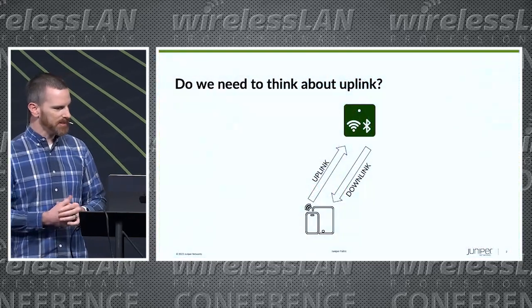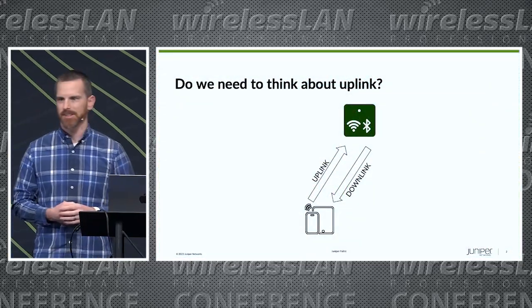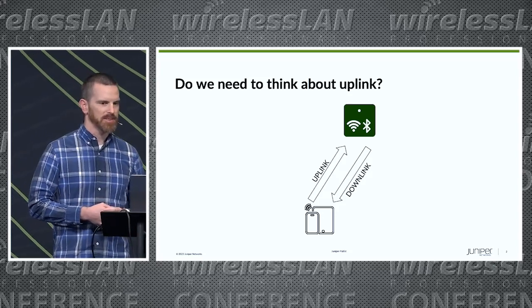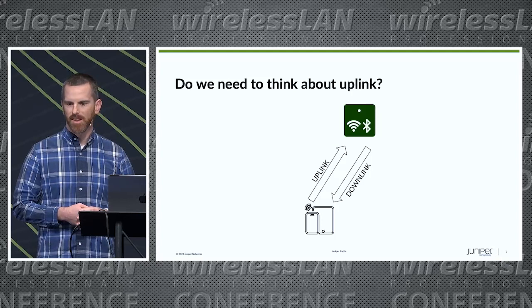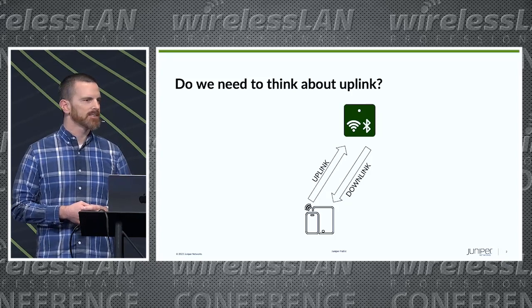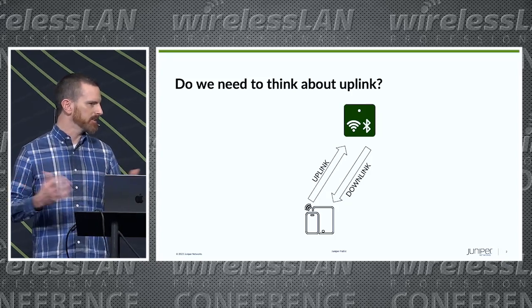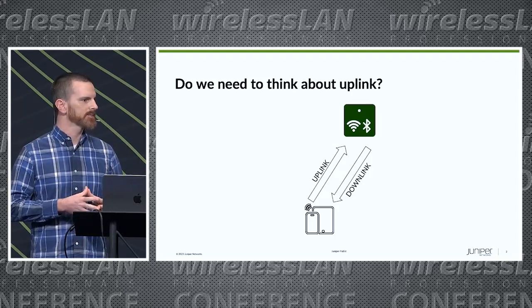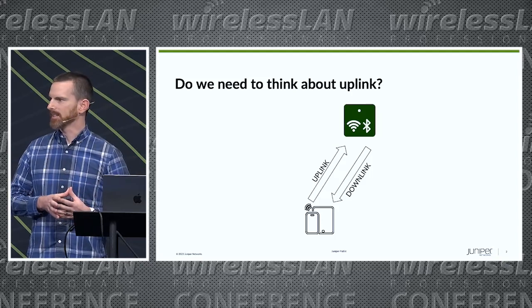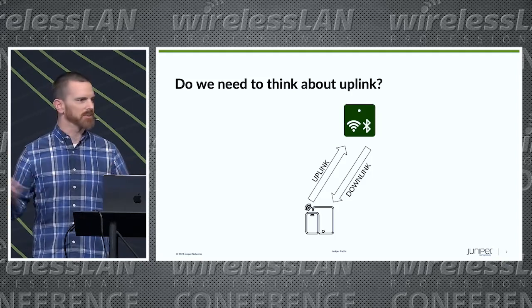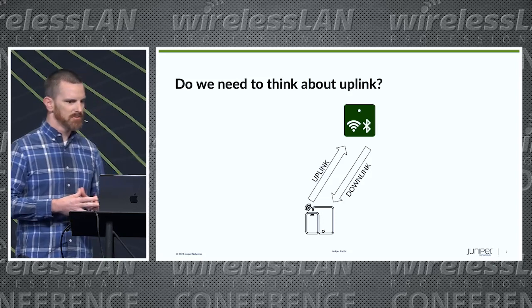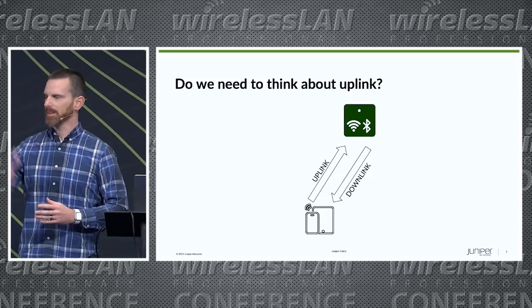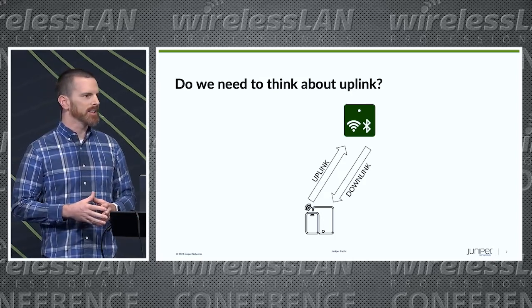I'm going to go a little bit deeper into something that Wes talked about earlier today: 6 gigahertz uplink performance, particularly with indoor clients. The way we design in 2.4 and 5 gigahertz is with a heavy focus on downlink — what's the RSSI at the client? We measure that with site surveys and RF modeling, and then we assume on the uplink everything will work. And for the most part, it does.